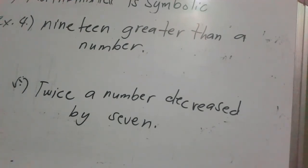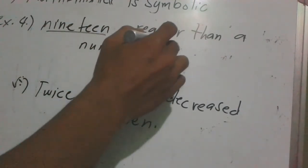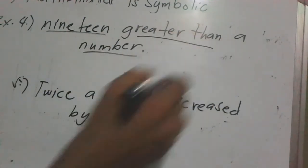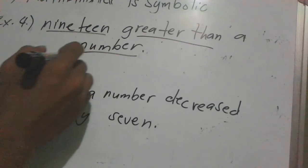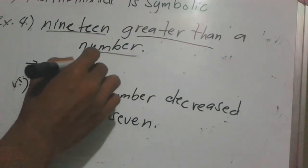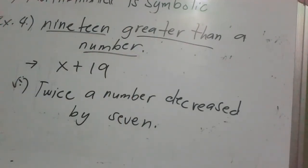Example 4: '19 greater than a number.' The number is unknown so we assign a variable — let's say x. Since 'greater than' here means added to, the expression is: x + 19.